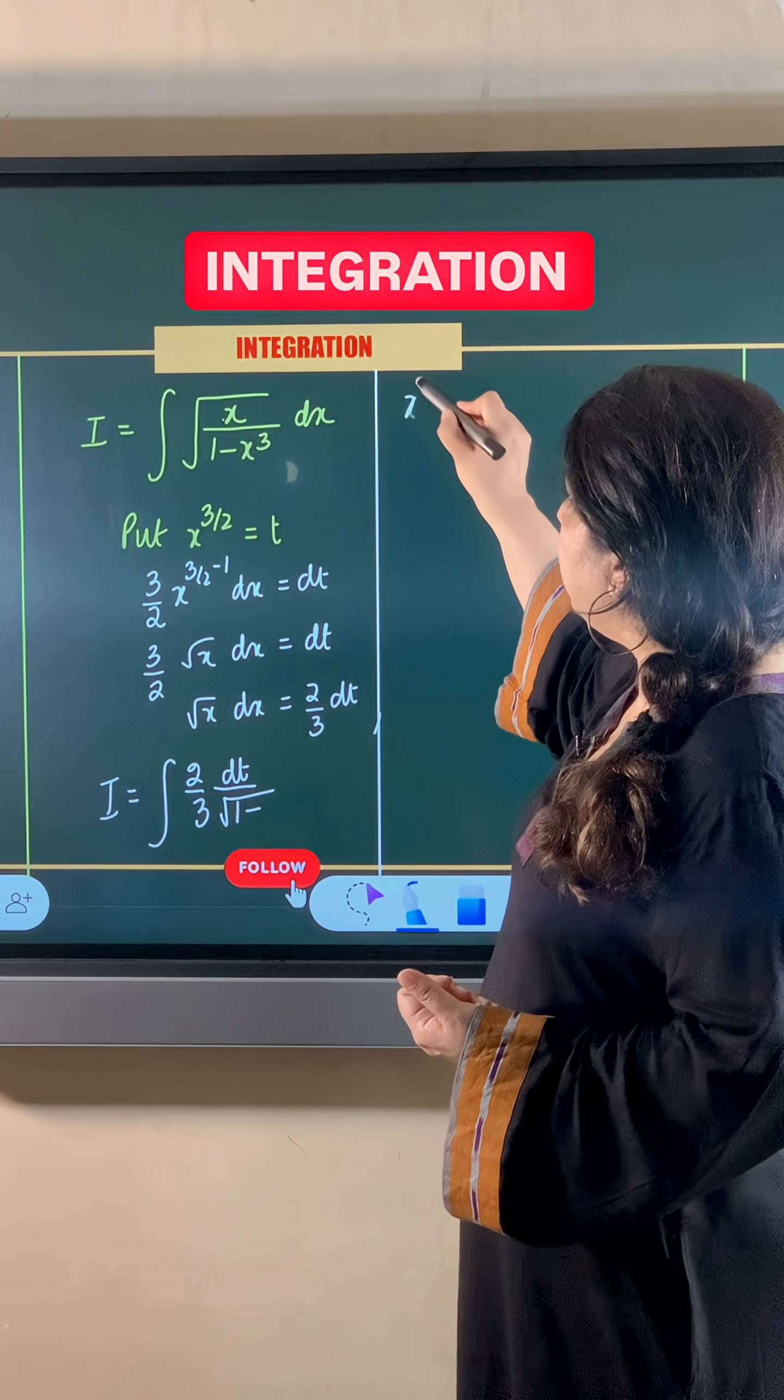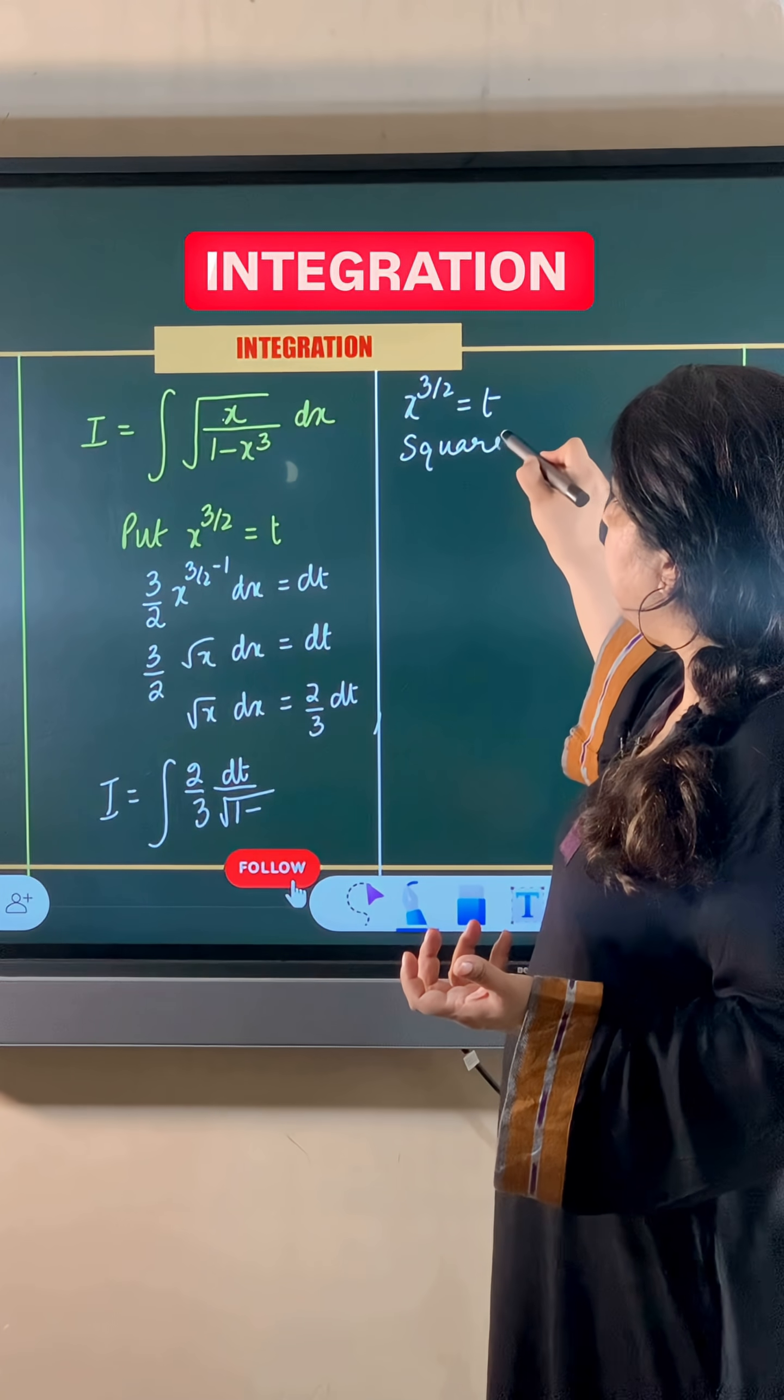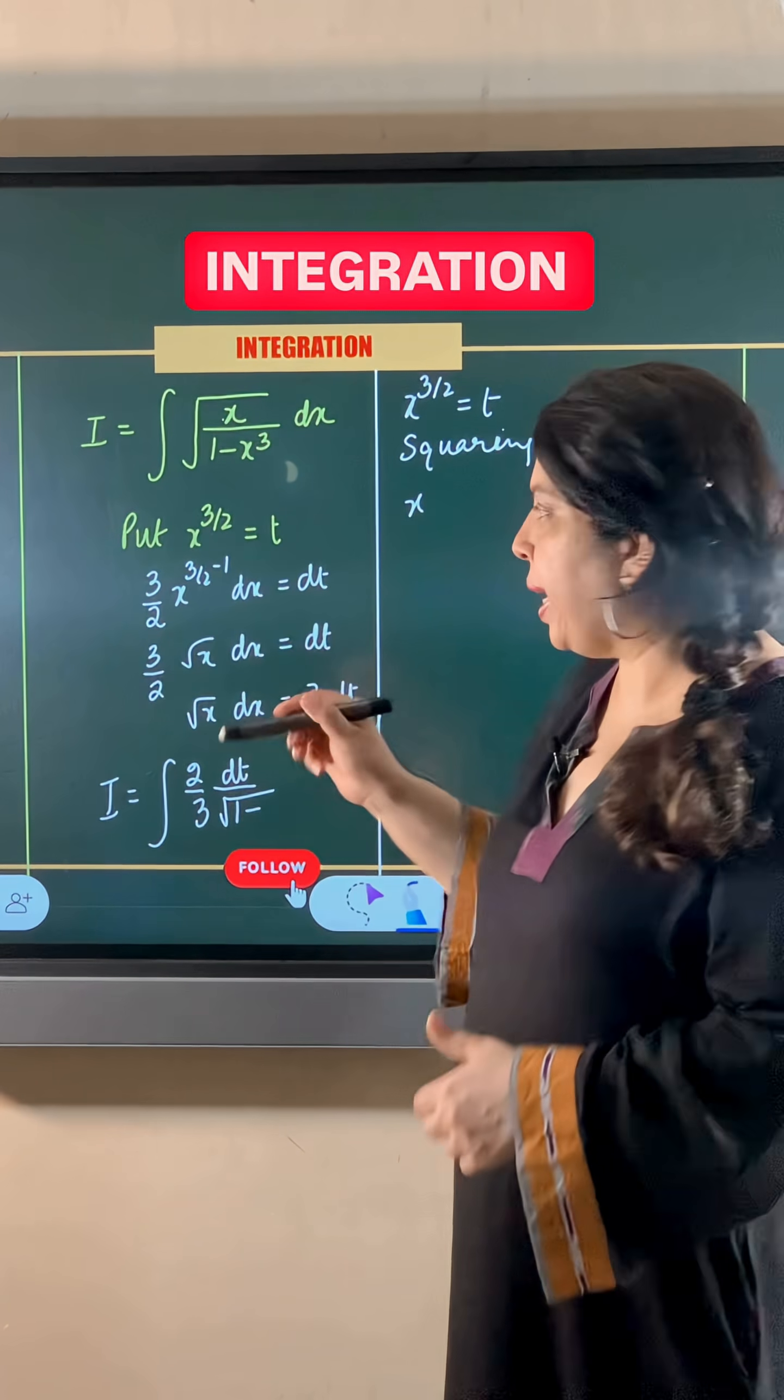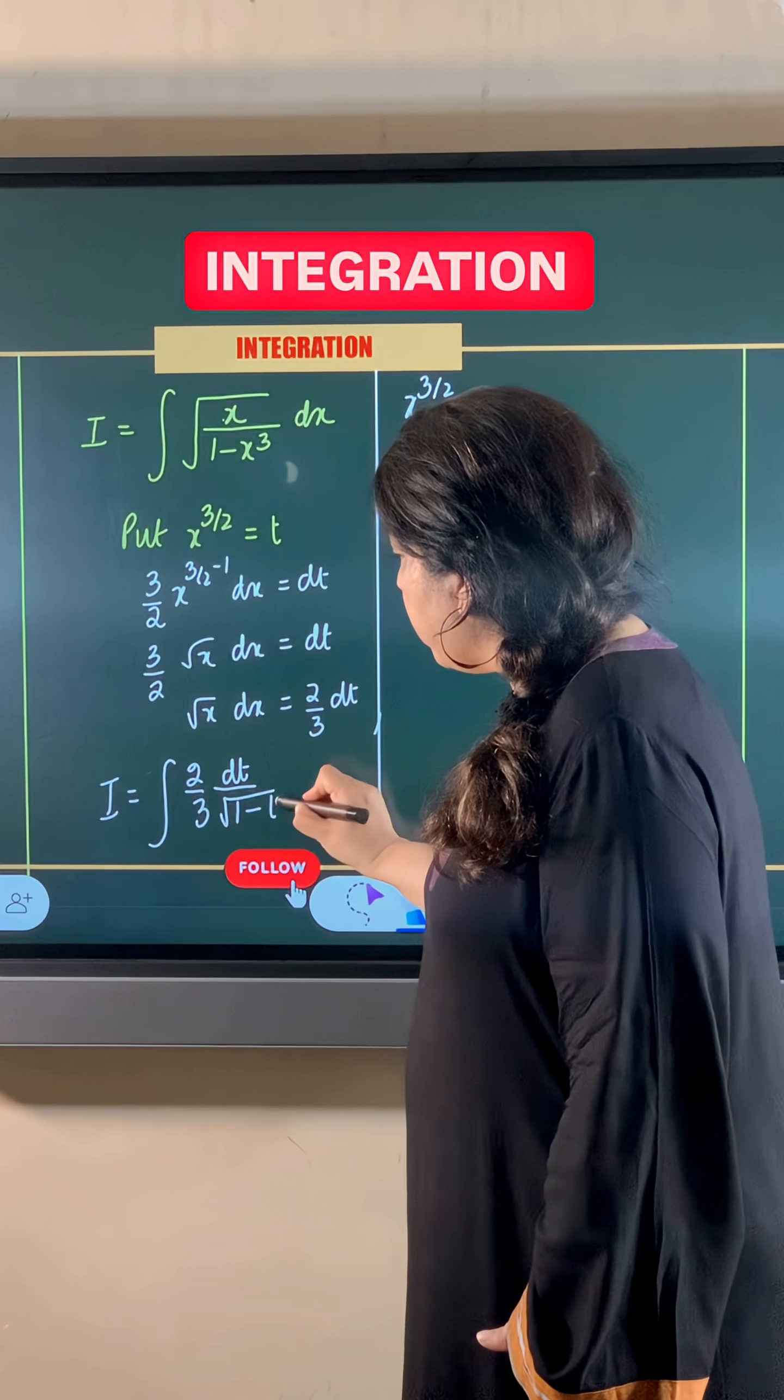Now x to the power 3 by 2 is equal to t. So if I square both the sides, I am getting x 3 by 2 multiplied by 2 is x cube only. So value of x cube is equal to t square. So this is t square.